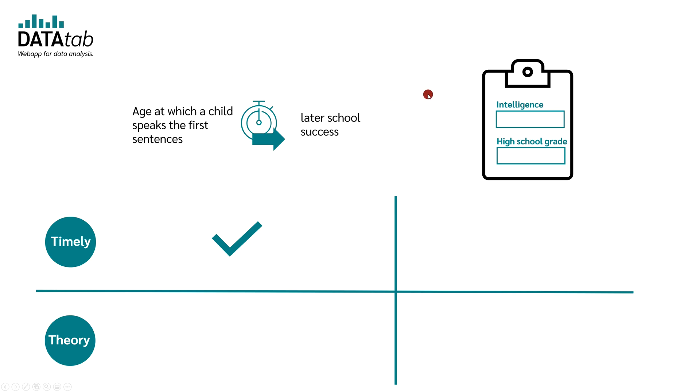The relationship cannot be the other way around. If one has great school success by a lot of studying and support, this has, of course, no influence on when the first sentences were spoken.